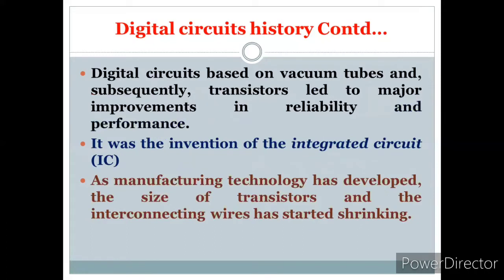These problems were overcome due to the invention of vacuum tubes and transistors. As vacuum tubes started evolving, digital circuits started evolving too. With the invention of silicon especially, transistors started evolving and major improvements happened in digital circuits. Reliability and performance were improved in ICs — integrated circuits. As manufacturing technology developed, the size of transistors and interconnecting wires began shrinking, reducing computers from desktops to the mobile devices we use today.